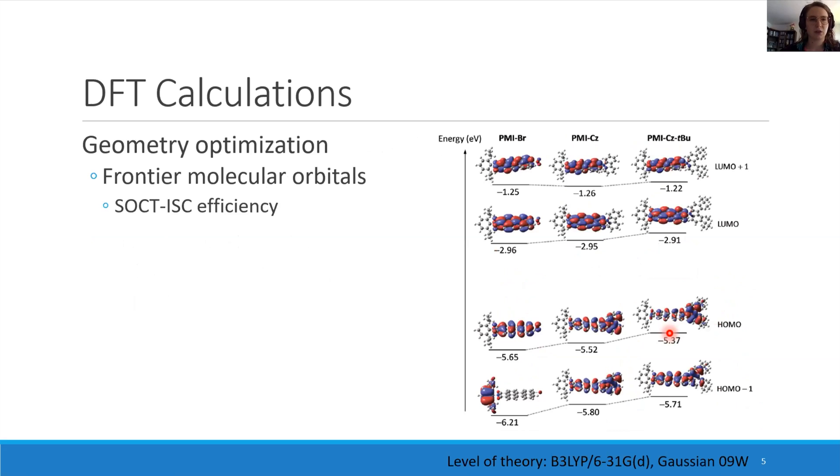First, I would like to discuss some DFT calculations that were performed. After the geometry optimization, you can look at the frontier molecular orbitals. You can see for the HOMO that it's mostly localized on the carbazole units, while for the LUMO it's mostly localized on the PMI.